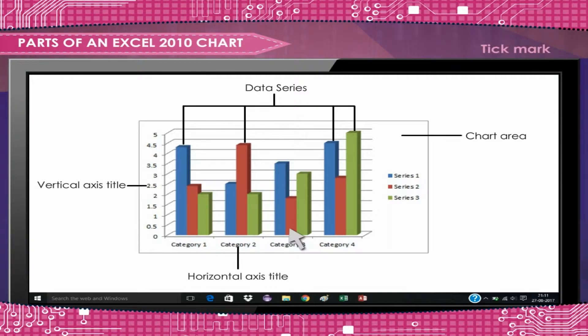Tick Mark: A small line intersecting an axis. A tick mark indicates a category, scale or chart data series.